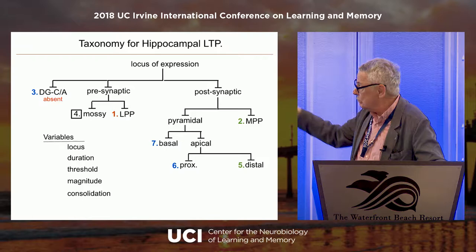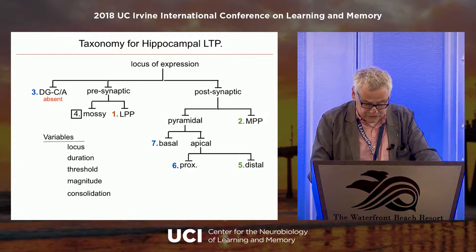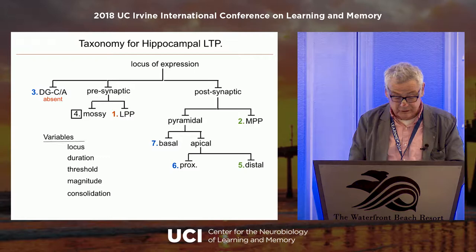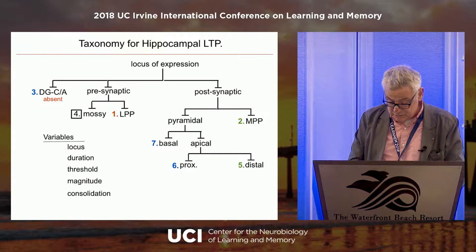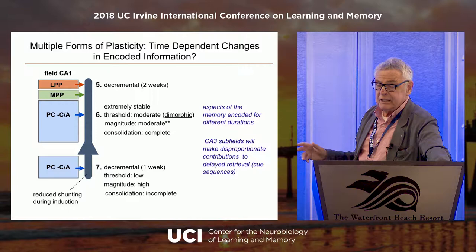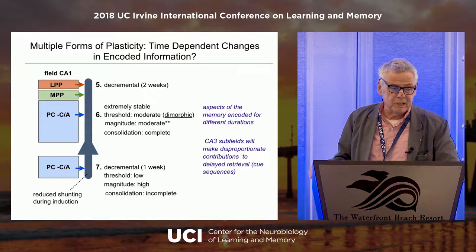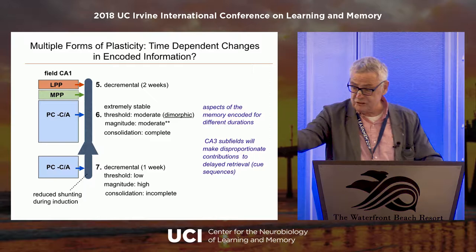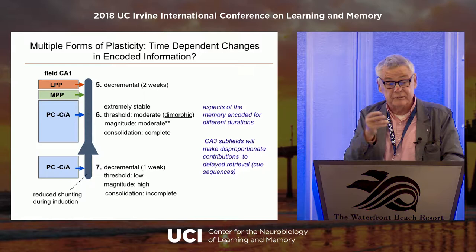Then we have the pyramidal cells — apical, basal dendrites, proximal, distal. They're all different, but they're all postsynaptic. So we have a categorization scheme. Let me put all those variables together on one neuron — this is field CA1. The top of the dendrite perforant path: Brian Derrick in Texas published a recent paper with chronic recording showing that LTP is decremental — it's gone in two weeks, coming way up and sliding steadily back to baseline.